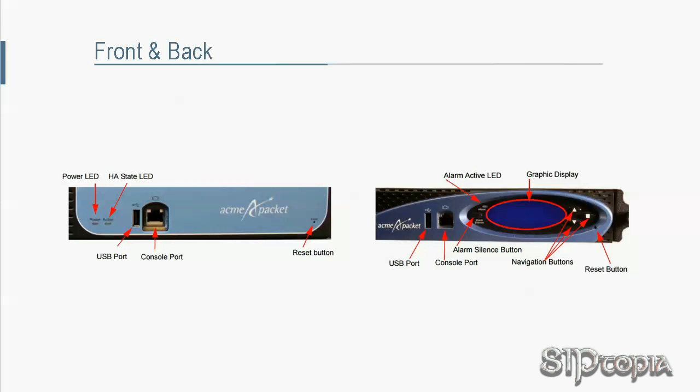Let's take a look at some ports, buttons, and LEDs. On the left, we see the frontal view of a 3820 series SBC, and on the right, we see a 4500. Since this series is called Oracle ACMA Packet Session Border Controller Simplified Configuration, let's cut to the chase. In the front, all we care about is the console port — the console port in the front is enabled by default while the console port in the back is disabled. If and when you enable the console port in the back, you can skip the red arrows and what they are pointing to.